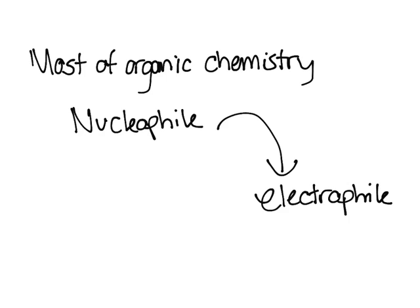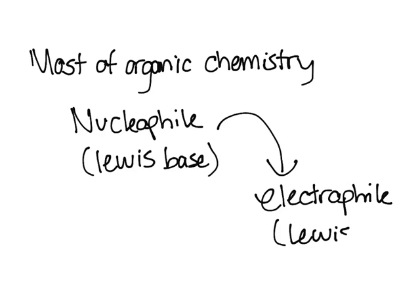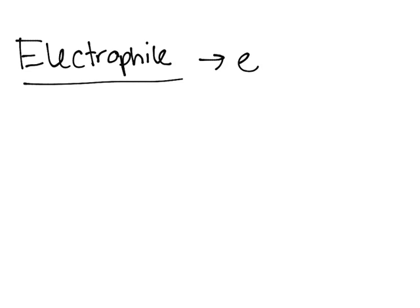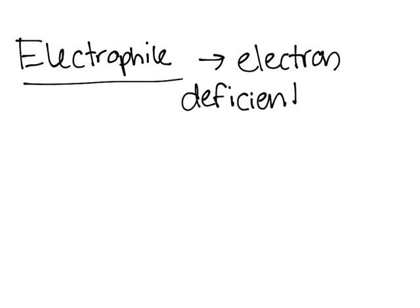The nucleophile is a Lewis base, while the electrophile is a Lewis acid. Let's talk about what they are more specifically and define them. An electrophile is something that's electron deficient.